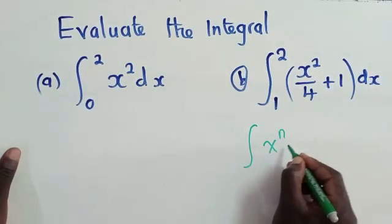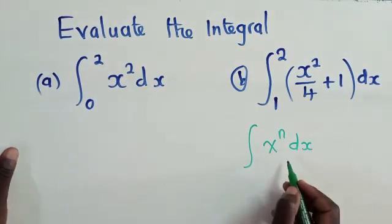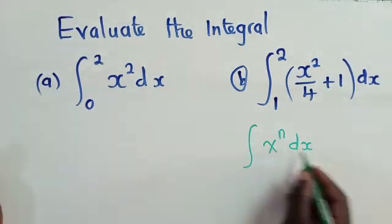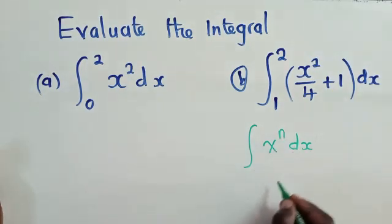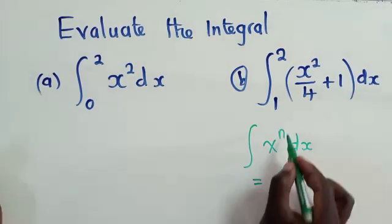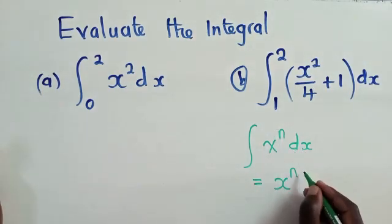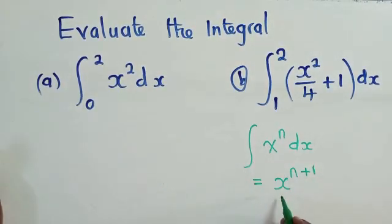You just check the power that you have. In this case we have n here, so we copy what we have inside here and then to the power, which is here, always add a one when integrating.